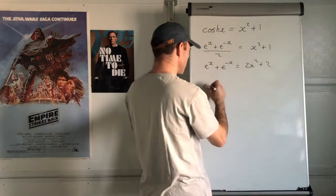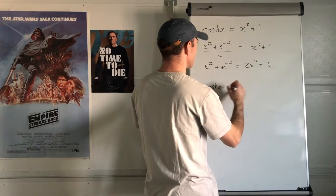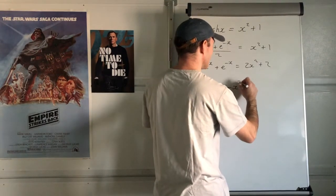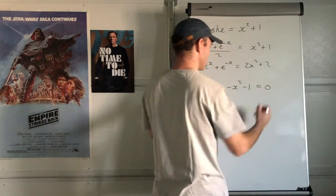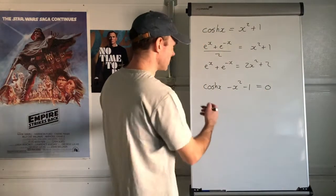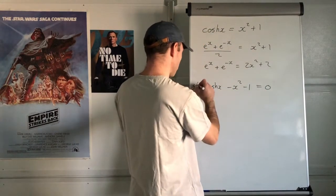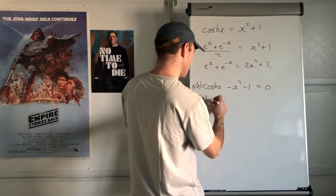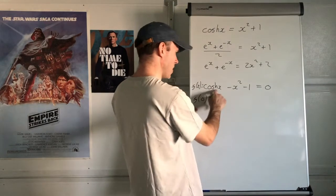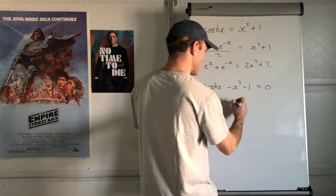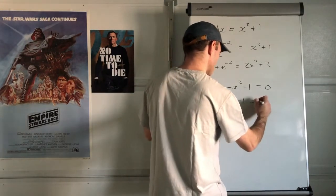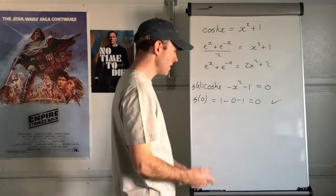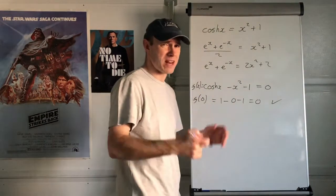Let's just take the top one because it's easier: cosh x minus x squared minus 1 equals 0. If I write this as f(x) equals that, f(0) equals 1 minus 0 minus 1 equals 0. Great — we know that when x is 0. But for other values, this is where I'll go for trial and error.